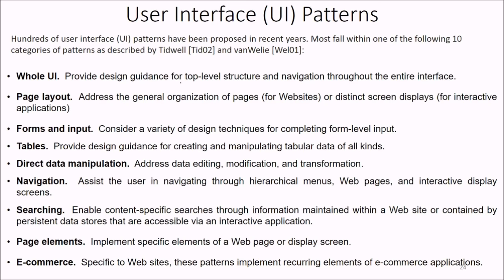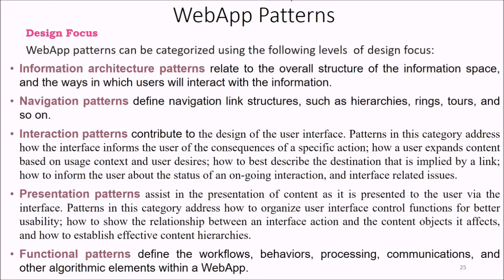Hundreds of user interface patterns have been proposed in recent years, and most fall into 10 categories described by Tidwell and Vanvili: whole user interface, page layout, forms and inputs, tables, data manipulation, direct data manipulation, searching, page elements, and e-commerce. Web app patterns can be categorized using certain levels of design focus: information architecture patterns, navigation patterns, interaction patterns, presentation patterns, and function patterns — all describing design aspects that have already been addressed by someone.